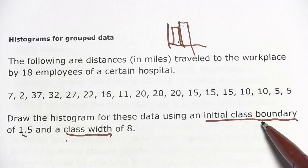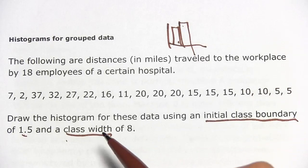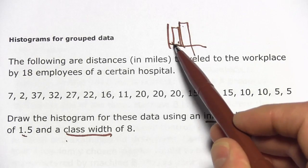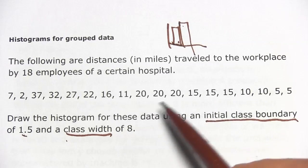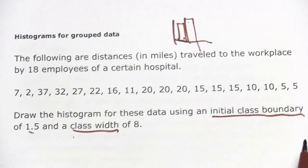So when they talk about an initial class boundary, that's the starting point for your first class. And when they talk about a class width, that's how far it goes from 1 to 10 or 1 to 20 or whatever it is. The first step, I think, to make this easier is to reorder the data from smallest to greatest. So let's just take a minute to do that.